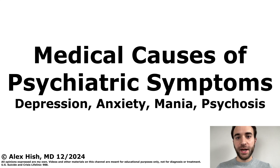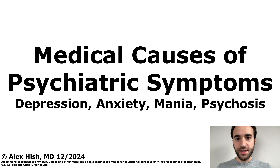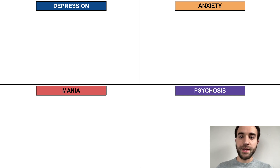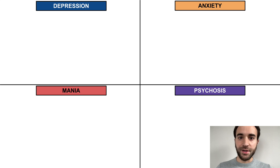This talk is an overview of the medical causes of depression, anxiety, mania, and psychosis. When creating a differential diagnosis for psychiatric symptoms, it's important to first rule out medical causes of symptoms before settling on a primary psychiatric disorder. This talk will outline common and rare medical causes of depression, anxiety, mania, and psychosis and how to screen for them.